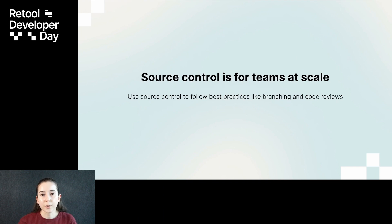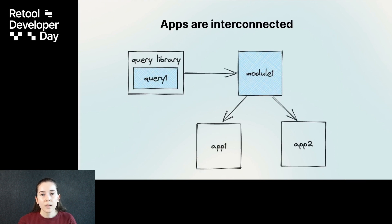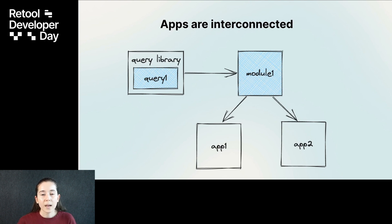Developers can use a familiar Git-based flow to work on branches and review pull requests before rolling out changes. Since we first introduced Source Control, our builders have created more interconnected apps than ever before, as they're reusing components and code across their organizations. As a result, we've revamped Source Control so that related changes from different parts of Retool can be managed within a single branch.